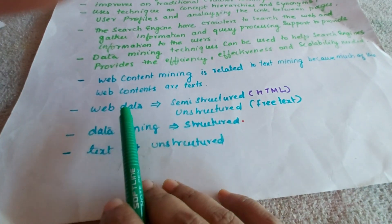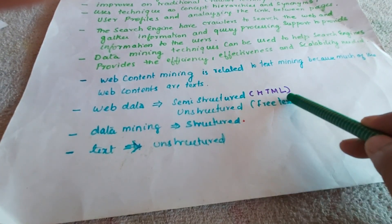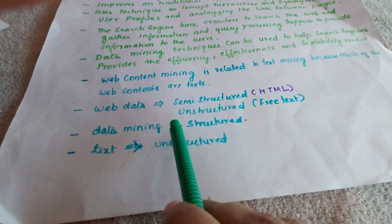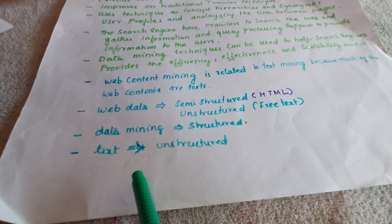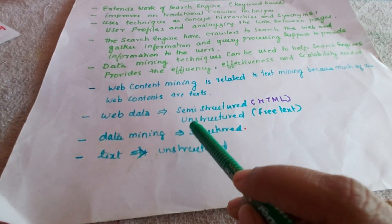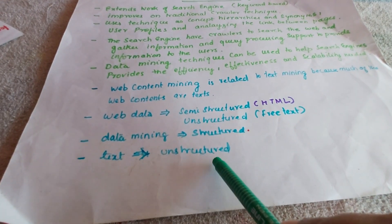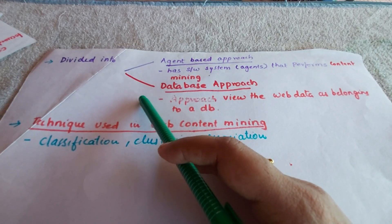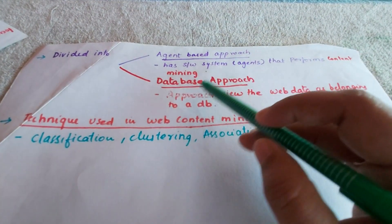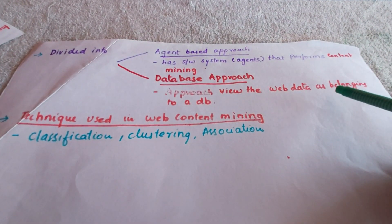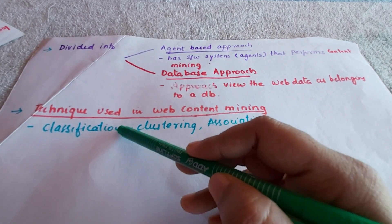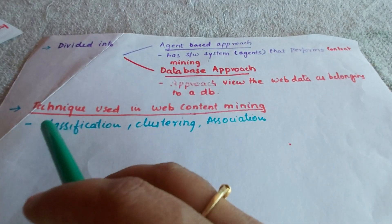Web data is semi-structured, in the form of HTML tags, and can also be unstructured as free text. Data mining works on structured data; the extended version of HTML is XML, which provides easier mining. Text mining is basically unstructured mining. Web content mining is divided into two approaches: the agent-based approach, which uses a software system agent that performs the content mining, and the database approach, which views web data as belonging to a database. Techniques used with web content mining include classification, clustering, and association.